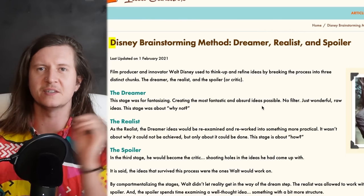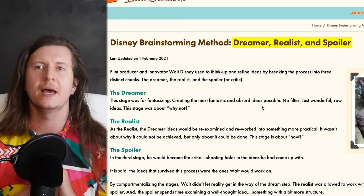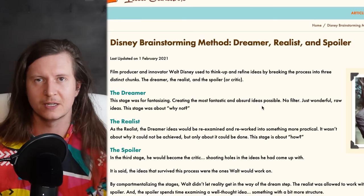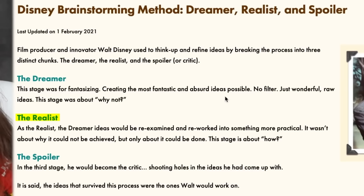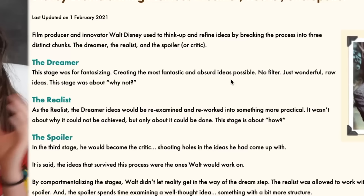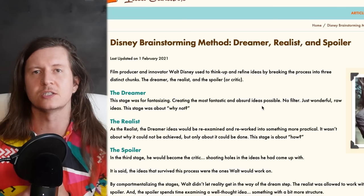Walt Disney, the renowned animator and filmmaker, had a beautiful process he dubbed the Dreamer, Realist, and Spoiler. The Dreamer stage was for fantasizing and creating the most fantastic and absurd ideas possible — for us, this is the probing stage where we look at all possibilities and gather inspiration. The Realist examines and reworks ideas into something more practical — for us, that's the invent stage where we create something useful for people. Finally, the Spoiler becomes the critic, shooting holes in the work and looking for ways to improve — for us, that's the evaluation stage.